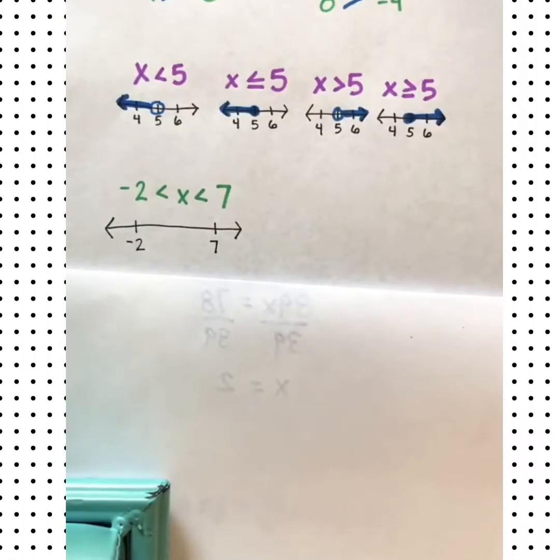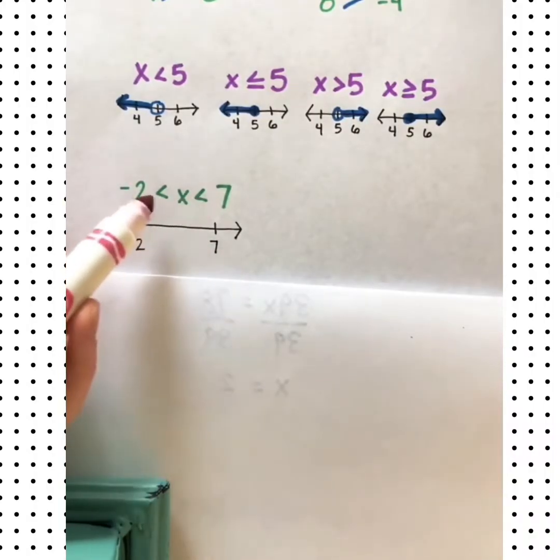Now, let's look at compound inequalities. This inequality here says negative 2 is less than x is less than 7. That means that x has to meet both of these requirements. It has to be greater than negative 2 but less than 7.